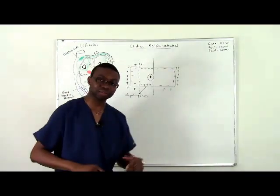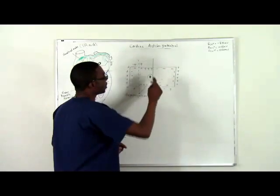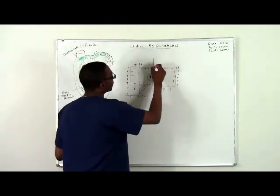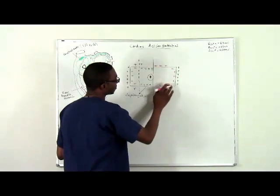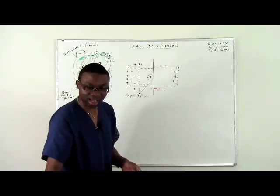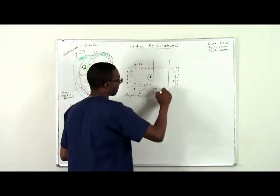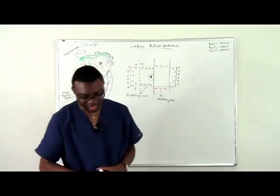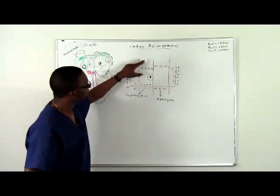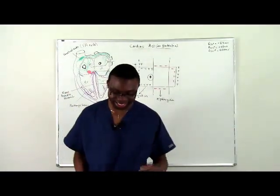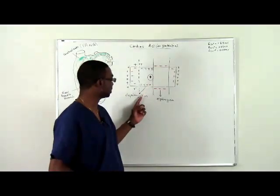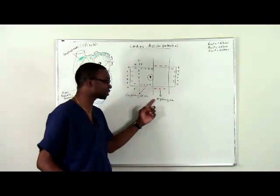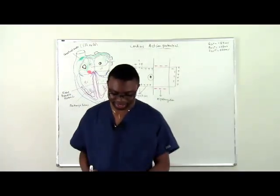The opposite of depolarization is repolarization. During repolarization, the negative charges move back to the outside of the cell. When there are more negative charges on the outside, we say the cell has repolarized. So to summarize: the inward flow of positive charges causes depolarization, and the outward flow of negative charges onto the outside of the cell is what we term repolarization.